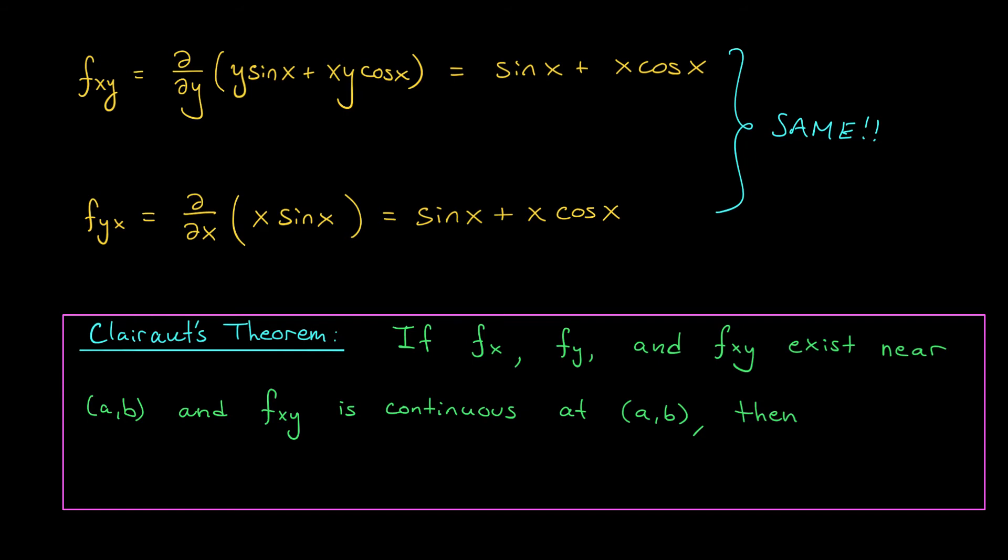Basically, it says that as long as your function has continuous partial derivatives, this will always be the case. More precisely, it says that if fx, fy, and fxy exist near some point of interest, (a,b), and fxy is continuous at (a,b), well, then your other partial derivative, fyx, will exist, and it will be equal to fxy at the point (a,b). Now, most functions that we'll be working with in this course have nice continuous partial derivatives everywhere, which means, according to Clairot's theorem, fxy will be equal to fyx at all points. And that's pretty remarkable. Now let's see how we can use Clairot's theorem to help us in the following example.